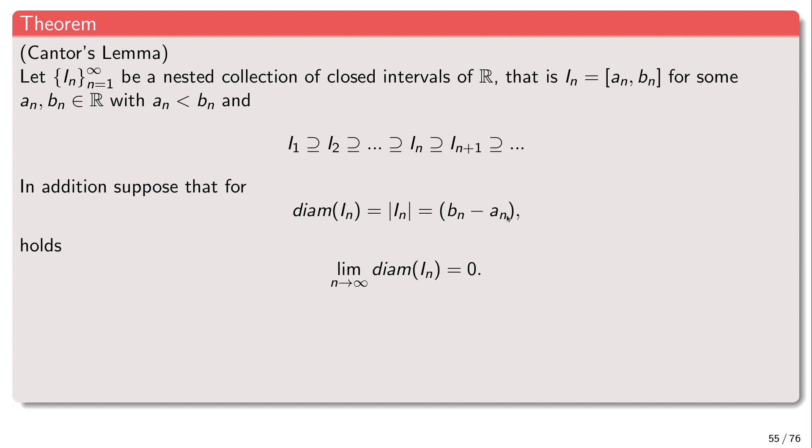You may ask why we use the notion of diameter. Well, whenever you have a way of measuring distances, you have a way of defining a diameter of a set. For any set, its diameter is the maximal possible distance between any two points in the set. For a circle, the diameter connects two antipodal points through the center — it's twice the radius. For arbitrary sets, the maximal distance between any two points is the diameter. In this interval case, the two farthest points are a_n and b_n, giving the length of the interval. This concept generalizes to arbitrary metric spaces.